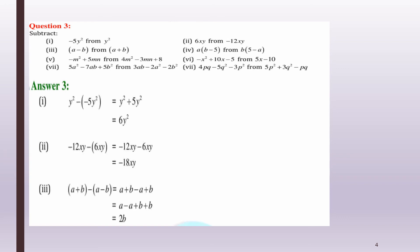Question number 3, Part 1: subtract -5y² from y². 'From y²' means we write y² first, put a minus sign, then separate the other term with a bracket since it is negative: y² - (-5y²). Minus into minus is plus, so y² + 5y² = 6y². Similarly, -12xy - 6xy: both are minus, so we add and keep the sign: -18xy.